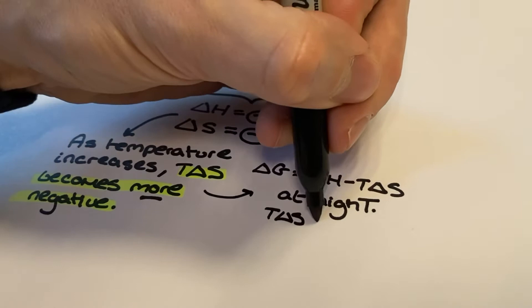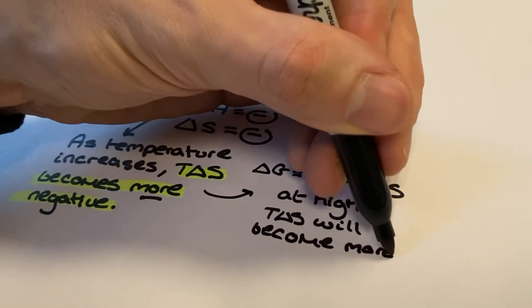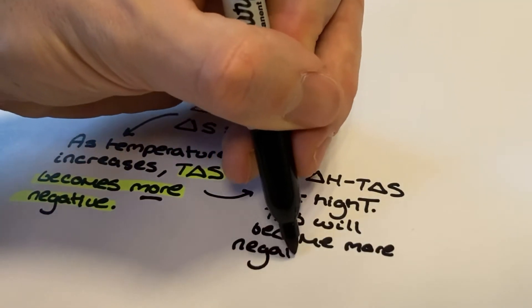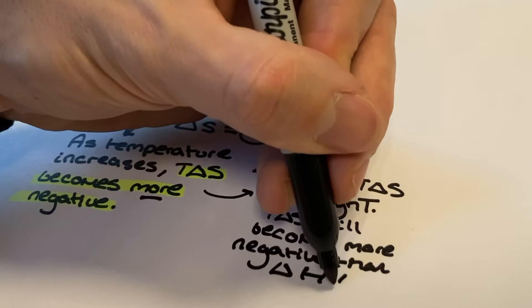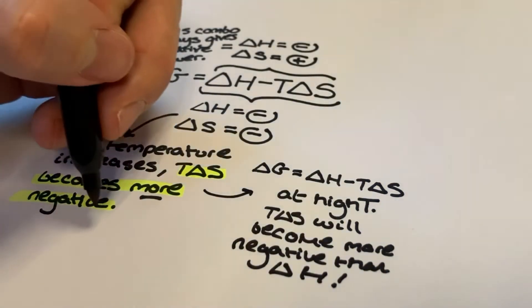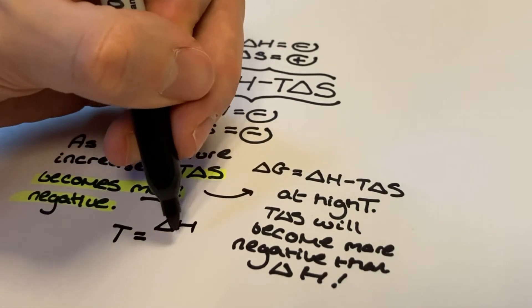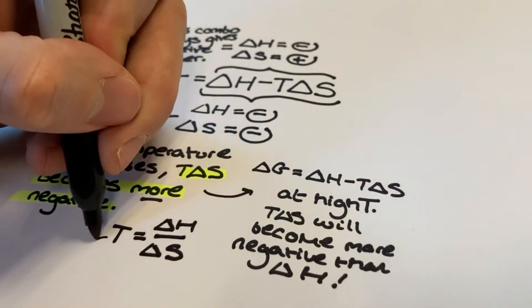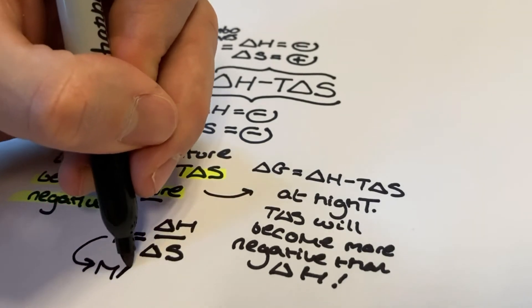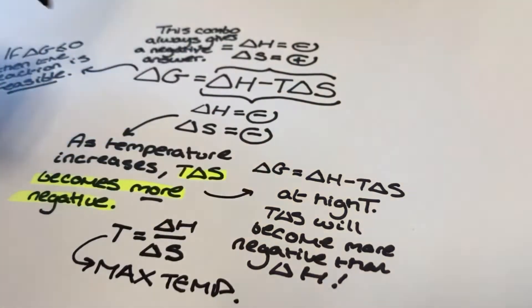Don't forget that delta H is in kilojoules per mole and delta S is in kilojoules per kelvin per mole. This temperature value is the temperature at which the feasibility of the reaction changes. We didn't consider this for the previous combination because it was going to be feasible at any temperature — here we don't have that circumstance. Due to the change in T delta S with increasing temperature, this temperature can be described as the maximum temperature for the reaction to remain feasible, as taking the temperature above this value would cause delta G to equal a value greater than zero.